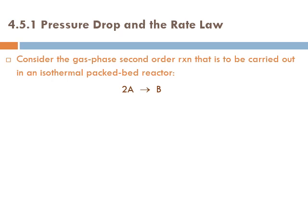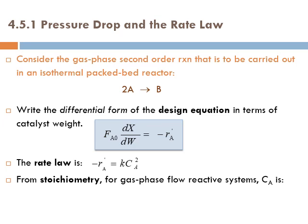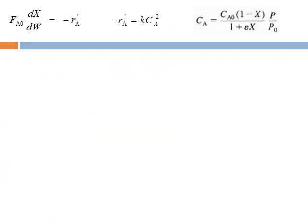Let's consider a gas phase second-order reaction carried out in an isothermal packed bed reactor: 2A → B. We write the differential form of the design equation in terms of catalyst weight: FA₀ dX/dW = -rA'. We follow this with the rate law for a second-order reaction, then apply stoichiometry. Starting from cA = FA/ε, we express FA and ε as functions of X, and arrive at the combined design equation.